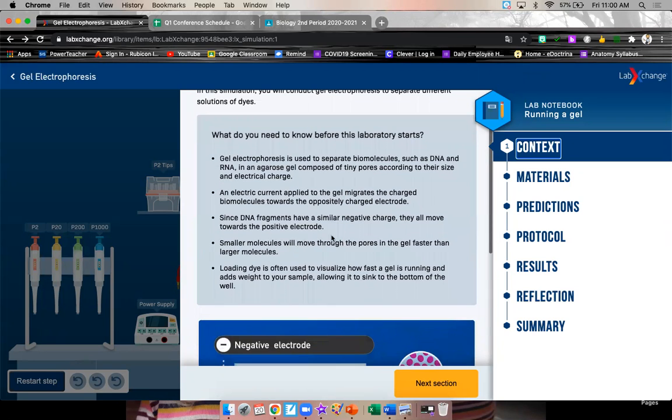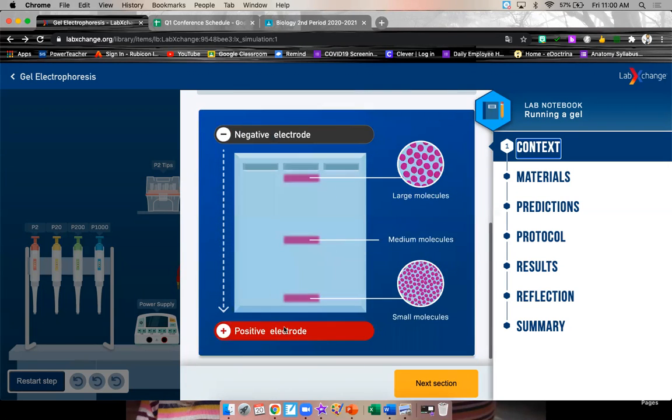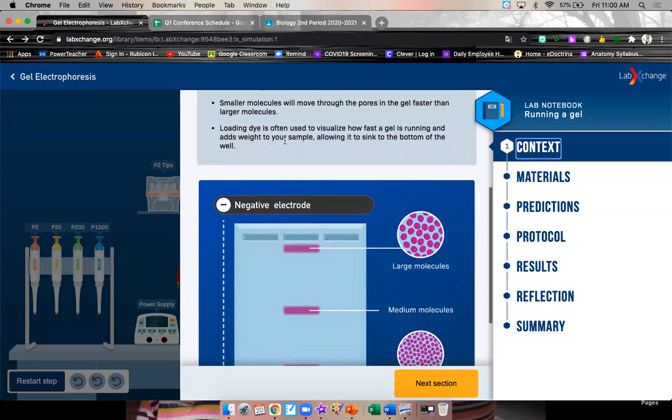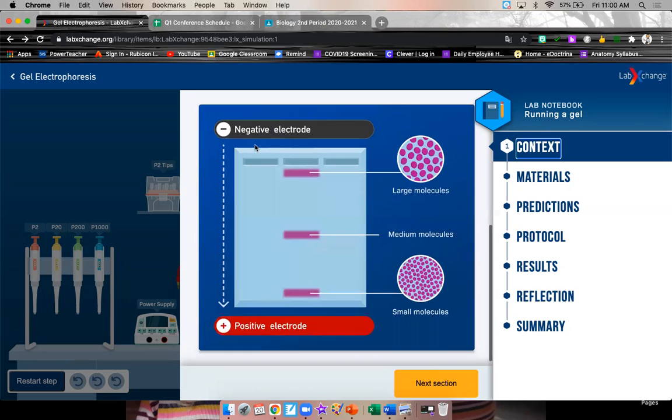Smaller molecules will move through the pores in the gel faster than larger molecules, allowing the smaller ones to go further. Loading dye is often used to visualize how fast the gel is running and adds weight to your sample, allowing it to sink to the bottom of the well. So the purple dye helps it stay in the well when we want it to, and it helps us see it. Alright, so that's what we're going to do. We're going to set up a virtual version of this gel. We're going to put in three samples of DNA, and we are going to run them next to each other.